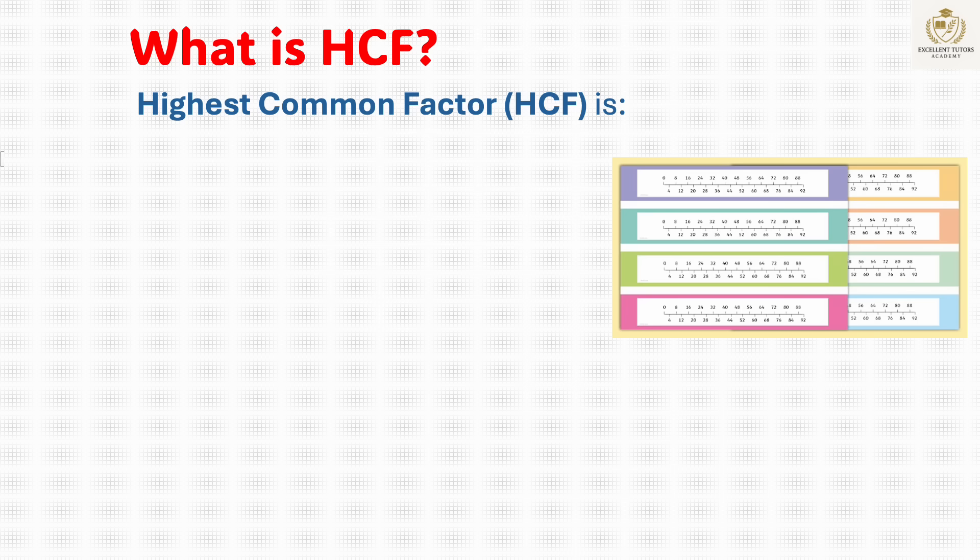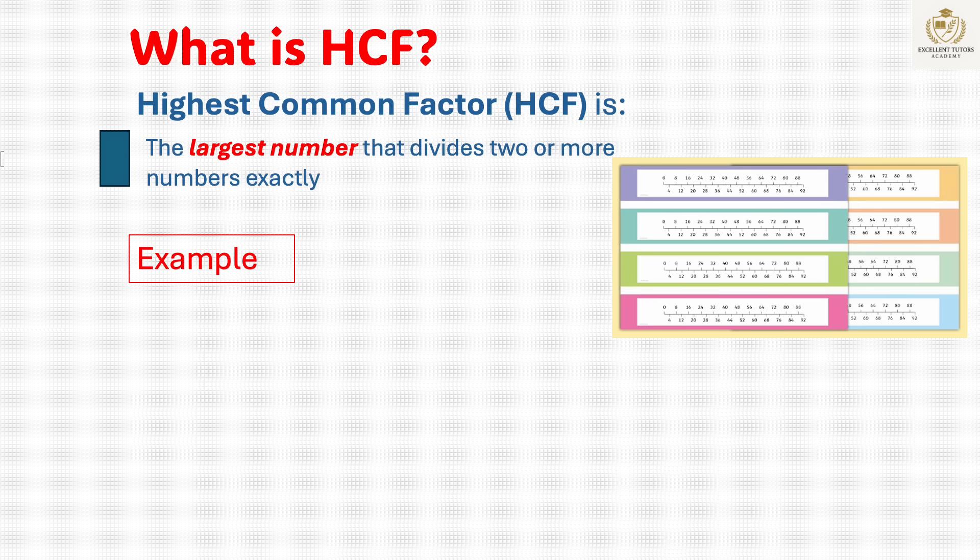HCF stands for highest common factor. It is the largest number that divides two or more numbers exactly. For example, the factors of 18 are 1, 2, 3, 6, 9 and 18.